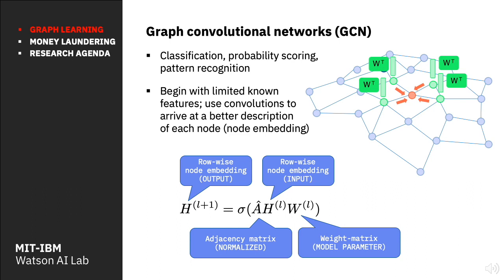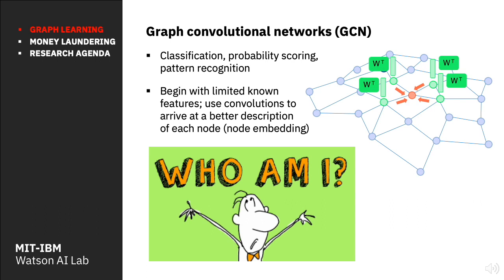With GCNs, we begin with certain attributes to describe the nodes and edges and use convolutions over the graph to pull out hidden properties and patterns — this is called node embedding. The objective is to achieve a better vector representation of each entity. In layman's terms, each node is asking the age-old question: who am I? We need a vector of finite length, so we have to bound the model without sacrificing accuracy. This is the challenge of scalability.